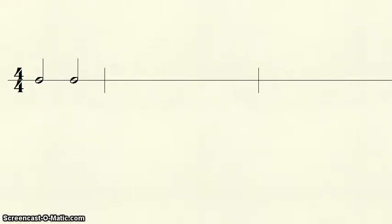Next, the half note. Half notes receive two beats. To note this, we will write the first beat and draw a line. Sound will continue, but we will not hear a new start to the beat, so we put the second beat on the line. A measure of four-four with half notes would be counted with a one and a line with a two on it, and three and a line with a four on it.